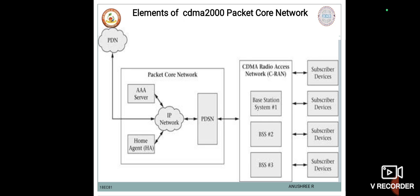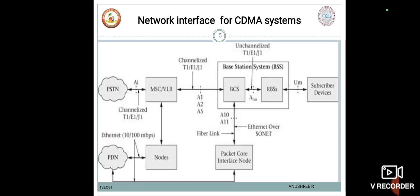There are five basic functions that wireless network management performs: the first is network surveillance or fault management; the second is security management; the third is configuration management; the fourth is performance management; and these constitute the five functions managed by the network management system. Moving on further, we are going to study about the network interfaces for CDMA systems.